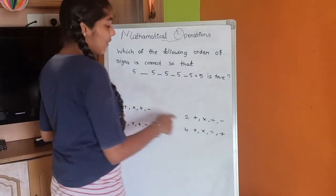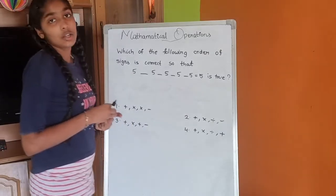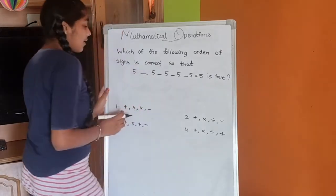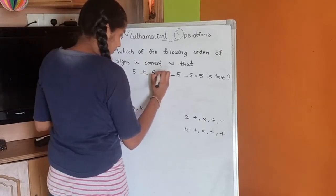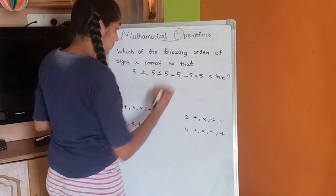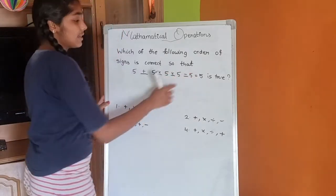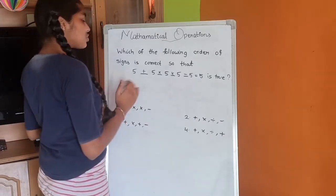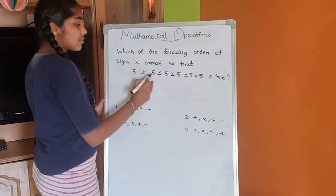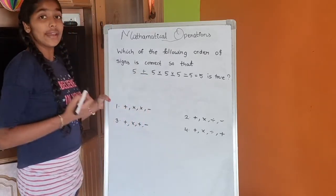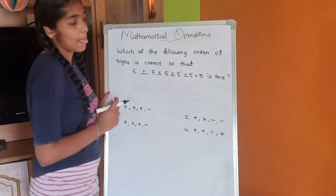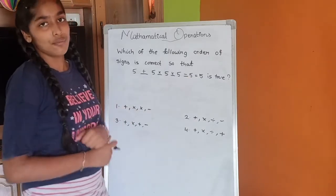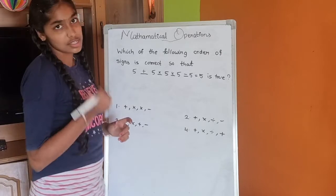Let us check each option one by one. The first option gives us: five plus five into five into five minus five. Five plus five gives us ten; ten into five gives us fifty; fifty into five gives us two hundred fifty; two hundred fifty minus five gives us two hundred forty-five. That is not equal to five, so the first option is wrong.